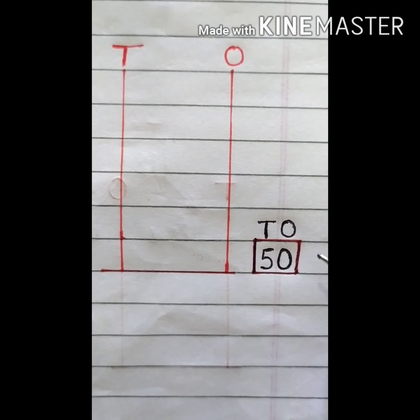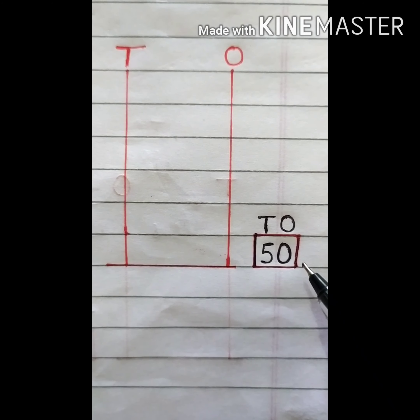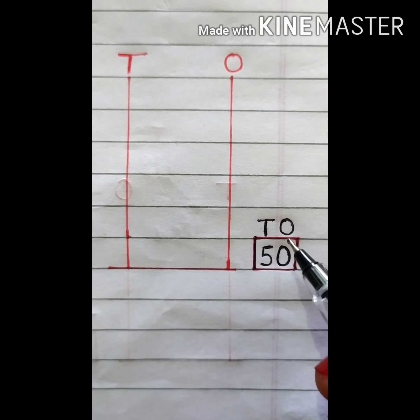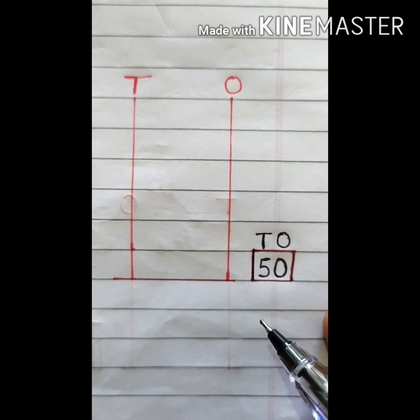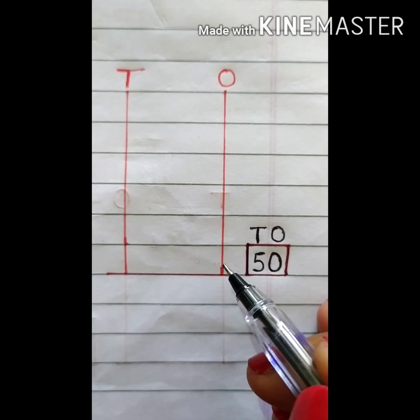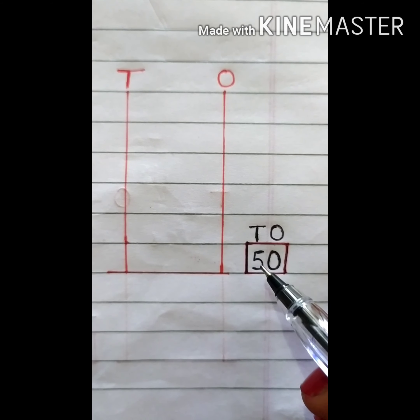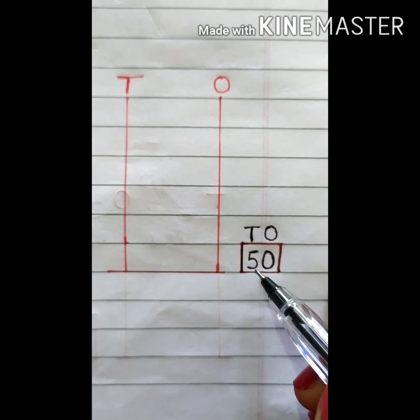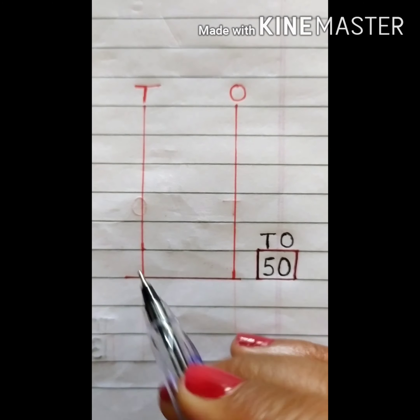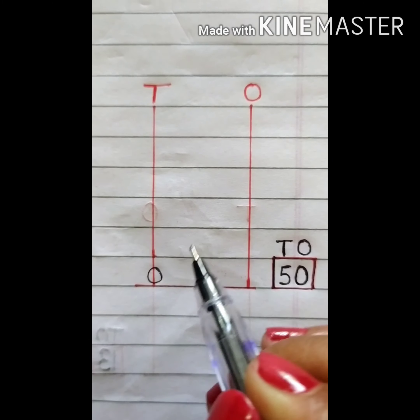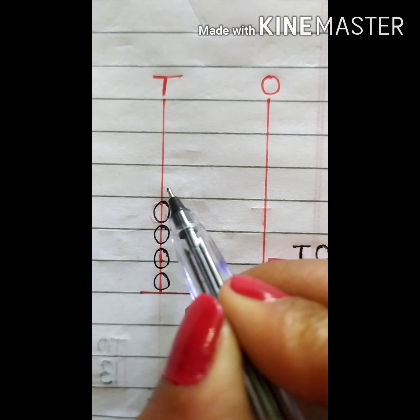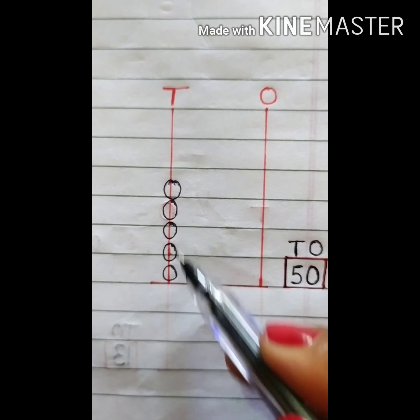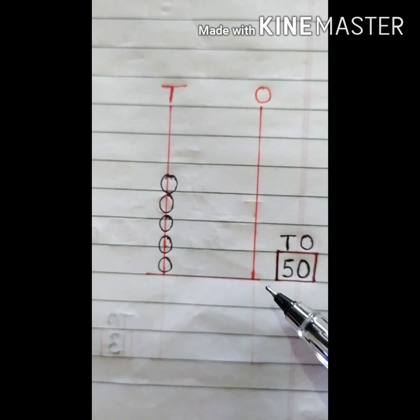Now we have to show number 50 on the abacus. I have already written T and O. Check the ones place — how many ones are there? Here we have zero ones, so we draw no beads. Now check the tens place — it is number 5, so we have to draw 5 beads: 1, 2, 3, 4, and 5. So we have shown number 50 on the abacus.